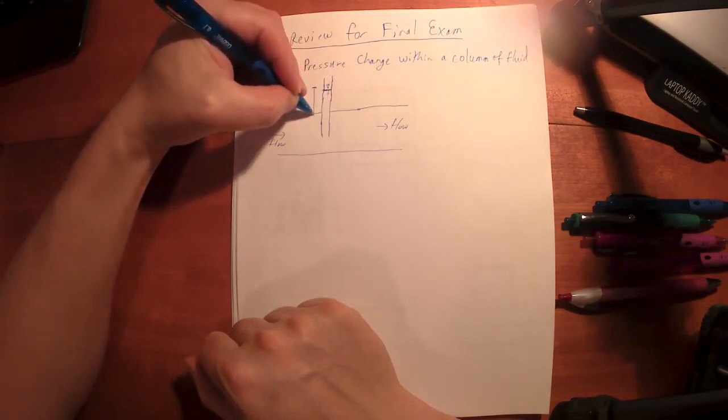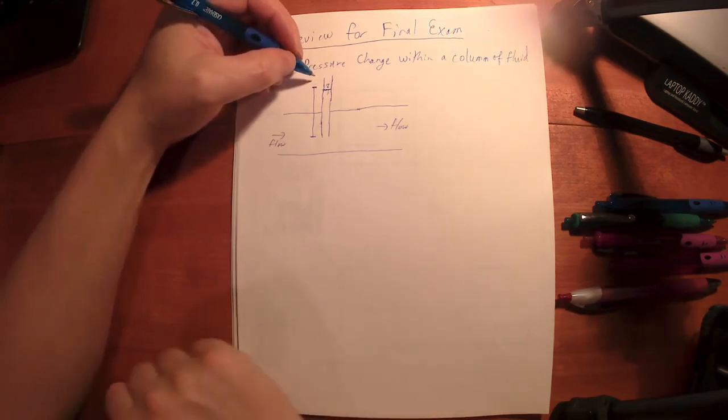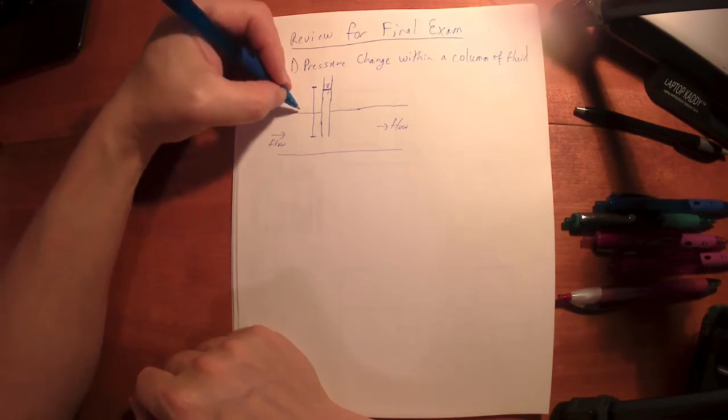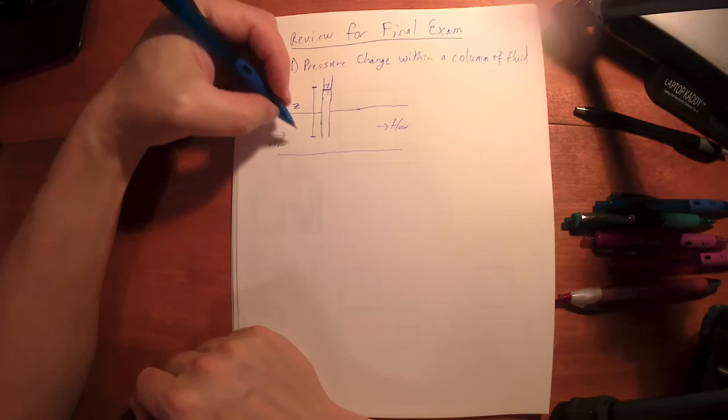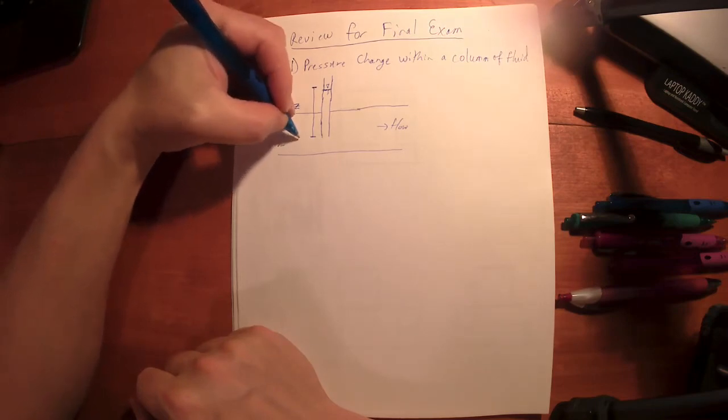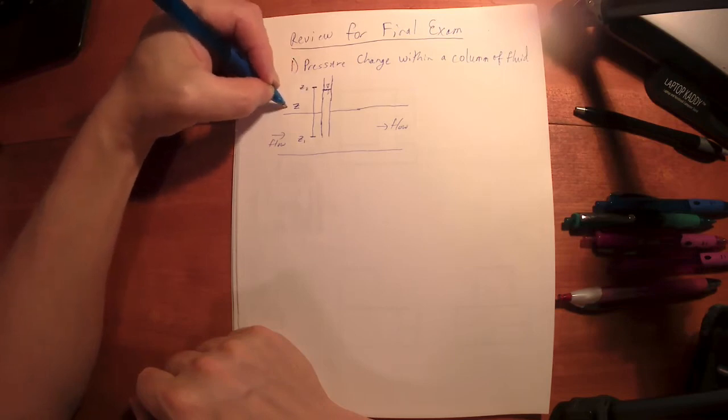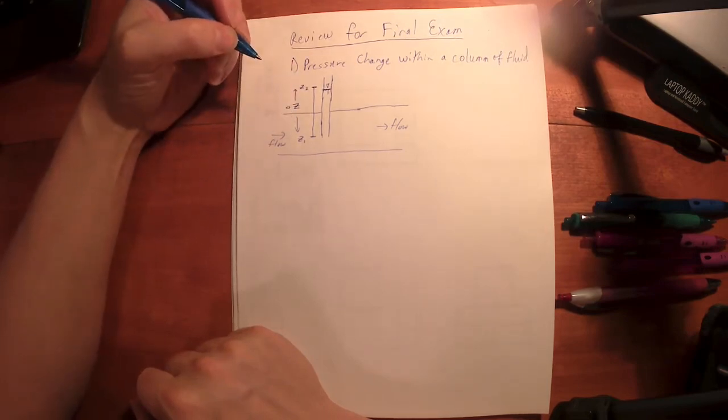The elevation, how high that column of fluid is, is basically the head, the pressure head within that fluid. You're going to have an elevation there, Z. What you have down here is, let's say we call this Z1, you call this Z2, and the distance in between them is delta Z.